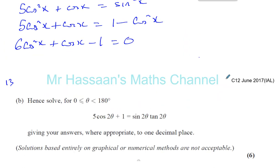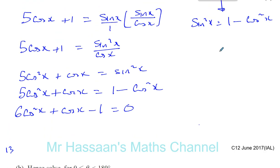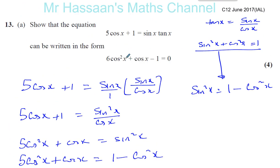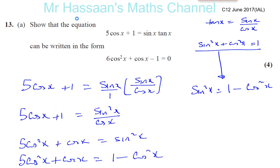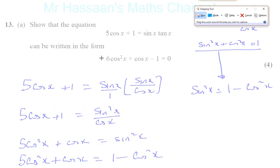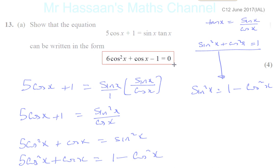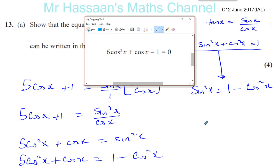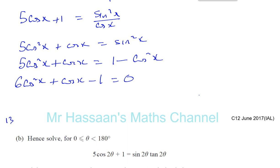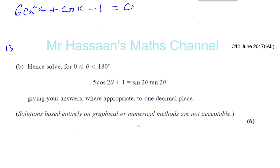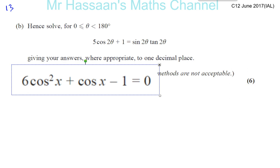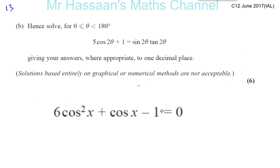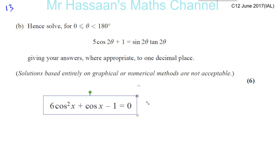Basically what we've done is we've already proved that this can be expressed in this form here. In case you're not sure how to do this, how to express it in this form, there's no problem here. Supposing you couldn't do part a — part a is worth four marks — don't give up on part b. You might be able to do part b without knowing how to do part a.